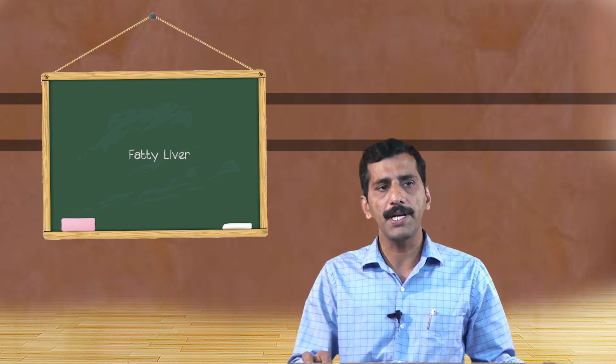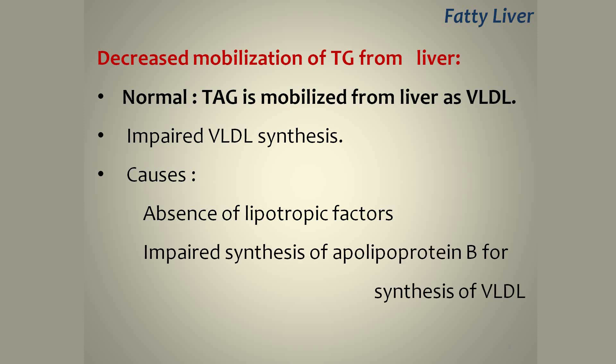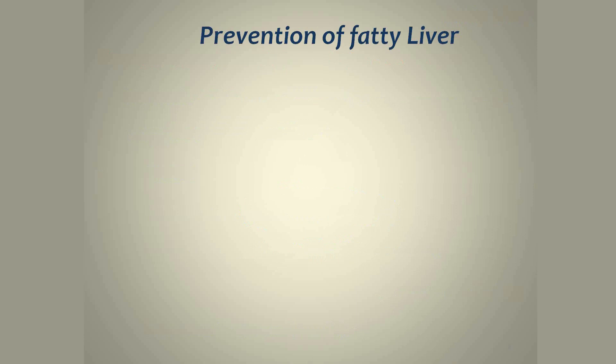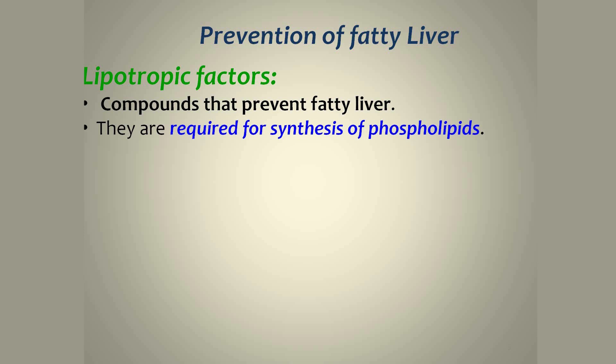The important causes of VLDL deficiency include decreased apoprotein synthesis, and also the absence of lipotropic factors. Lipotropic factors are those factors which increase the production of VLDL and thereby prevent fatty liver. They are required as important factors for this purpose.